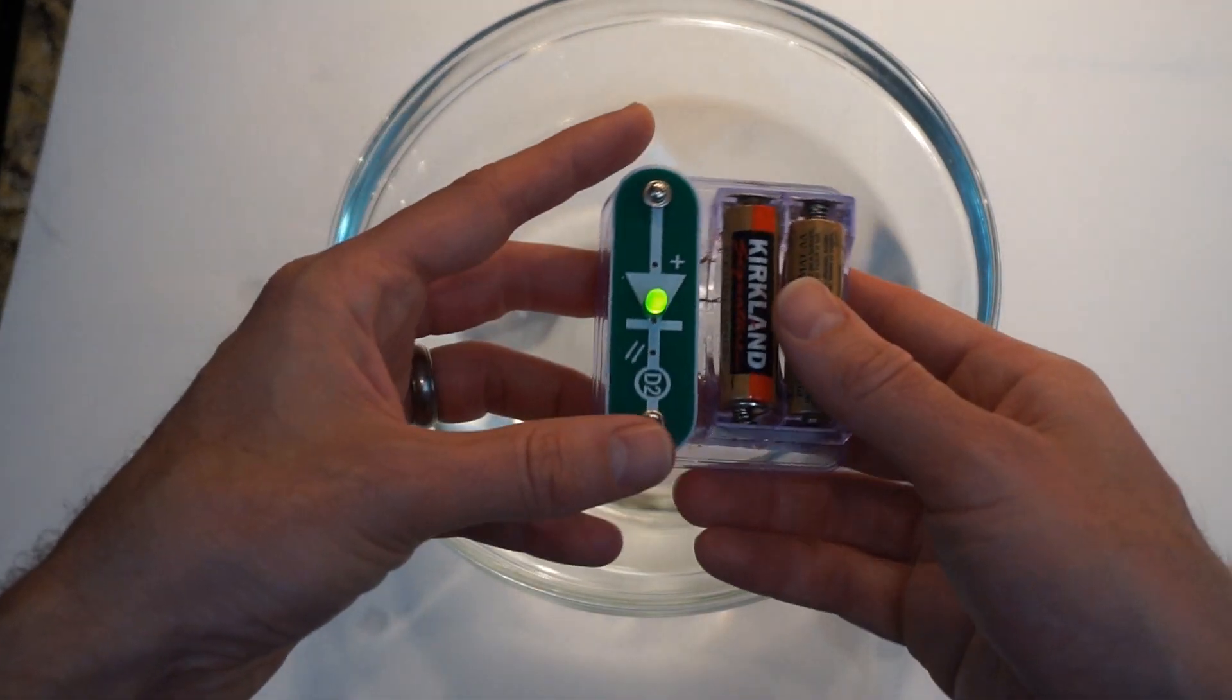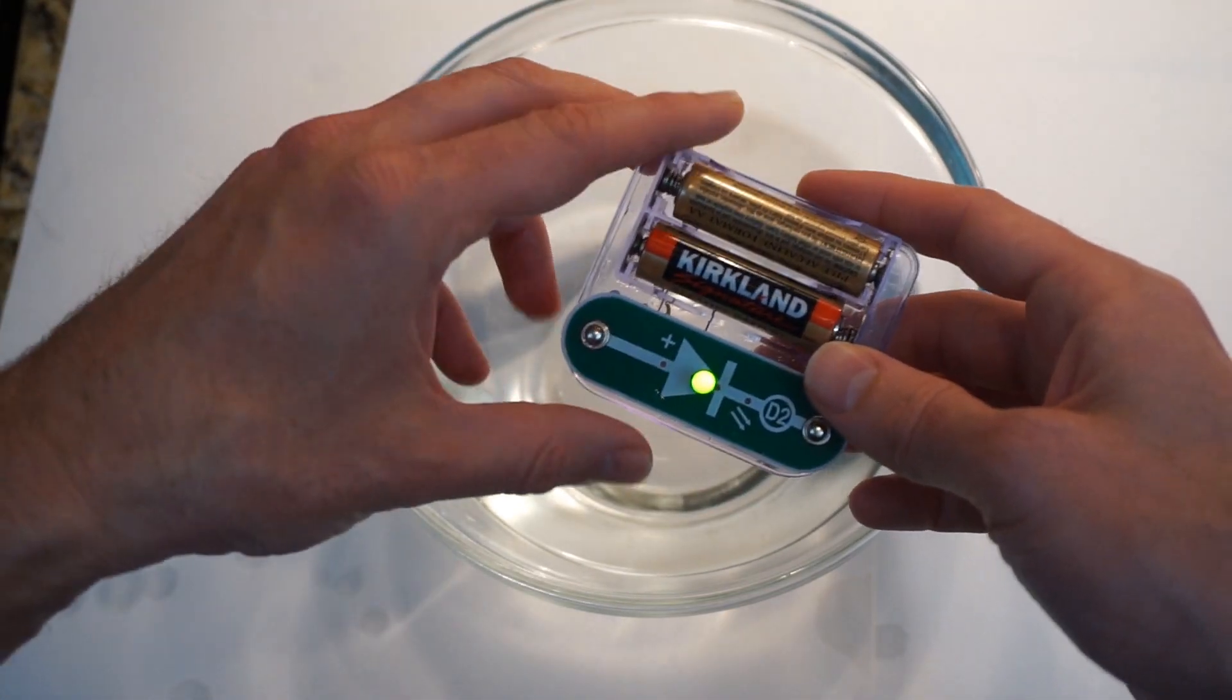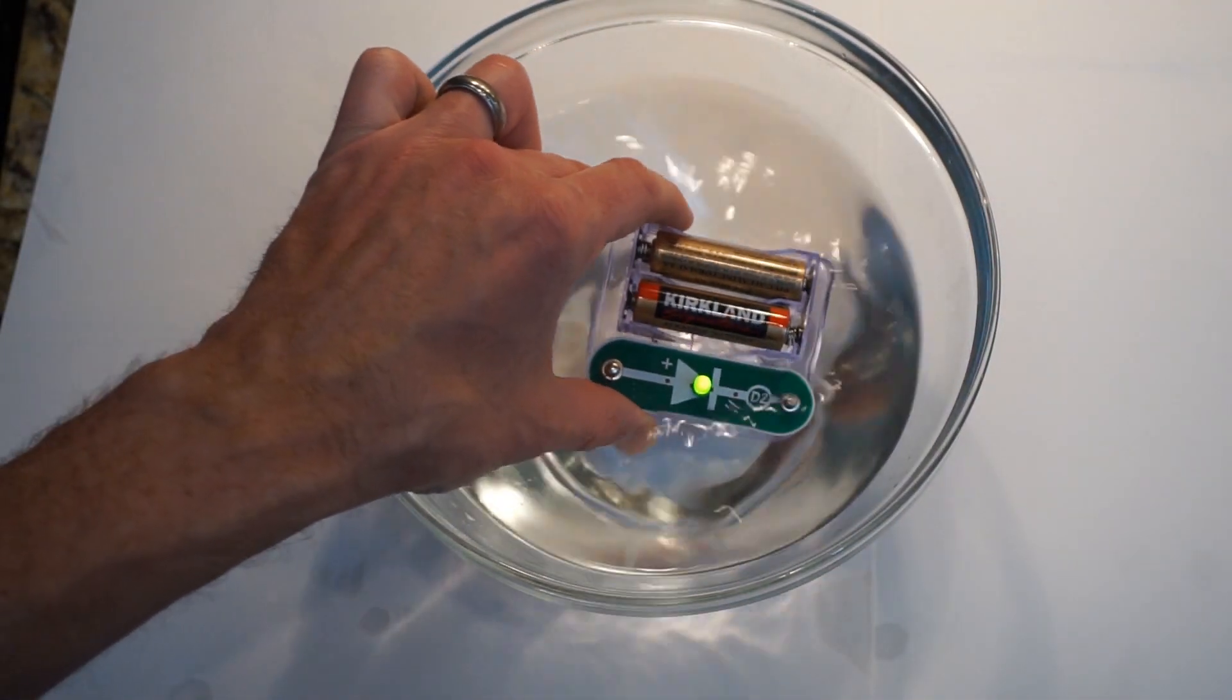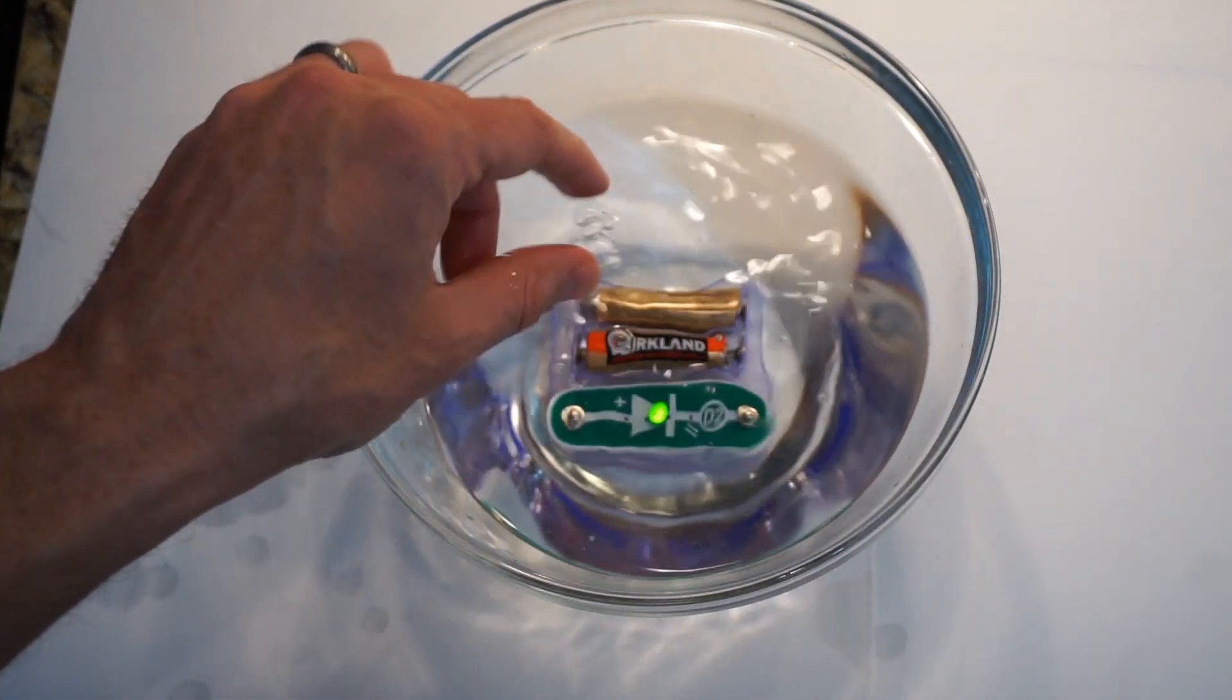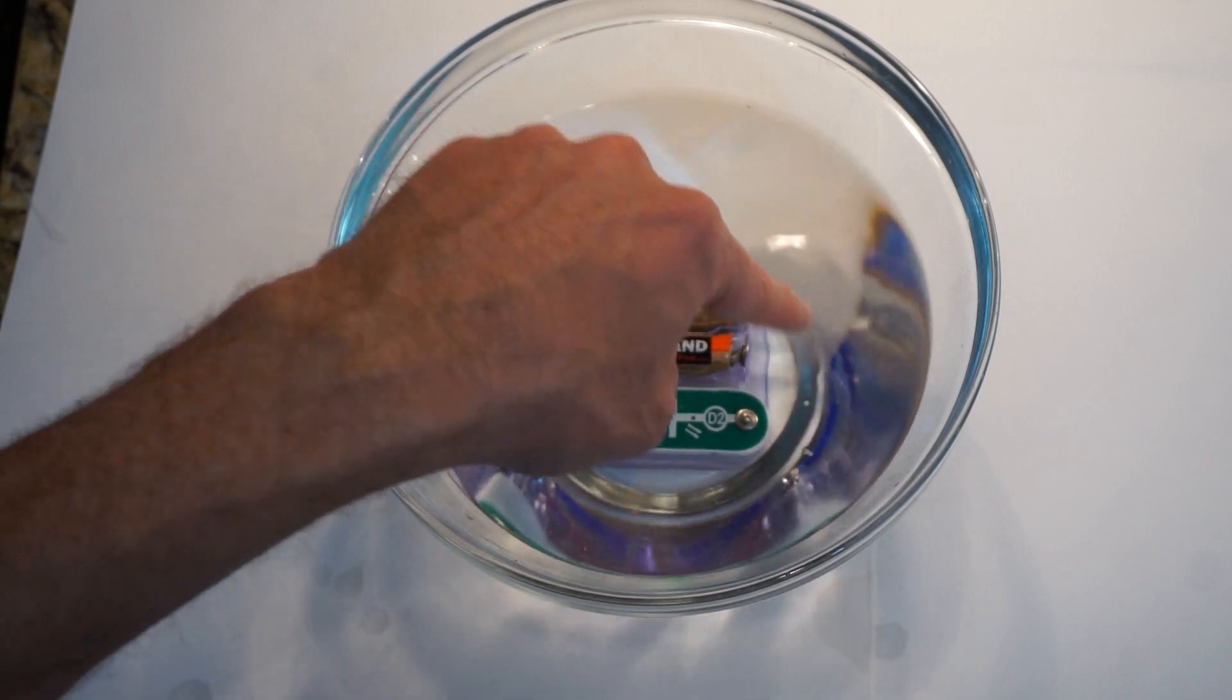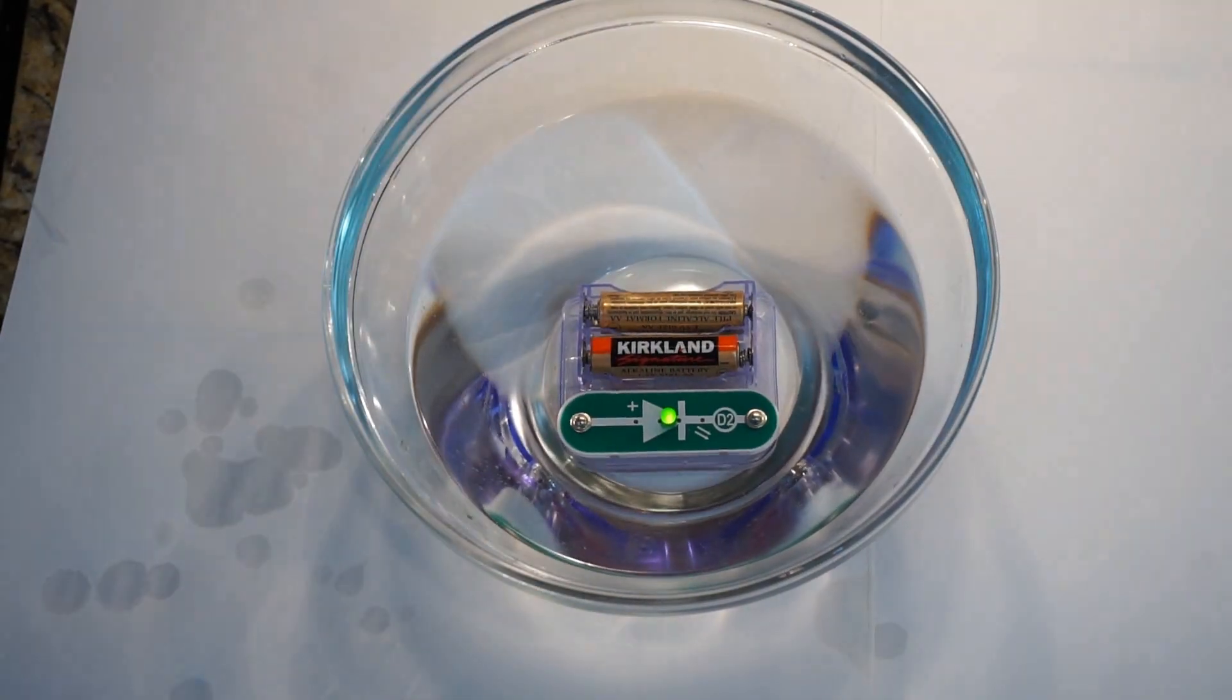For example, if I have this simple circuit here - this is just an LED light connected to some batteries. If I put it in some tap water, it stays on, it's fine. It doesn't really matter whether it's in water or not, because the water is less conductive than the metal circuit it's going through, so it doesn't really change anything.